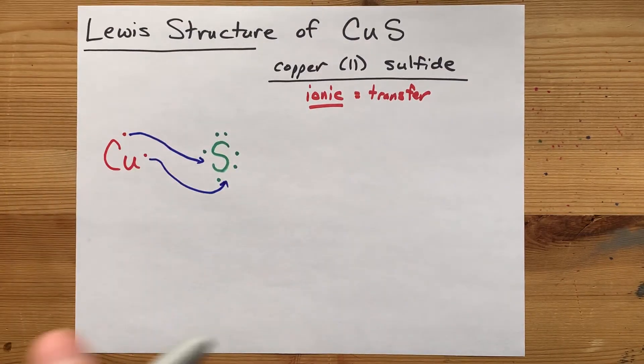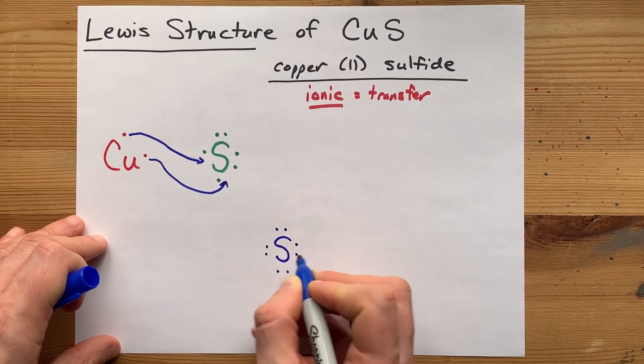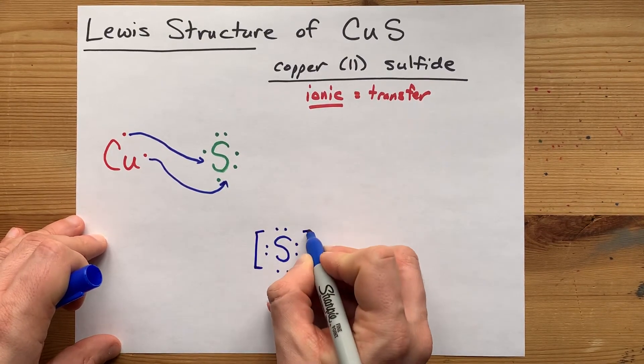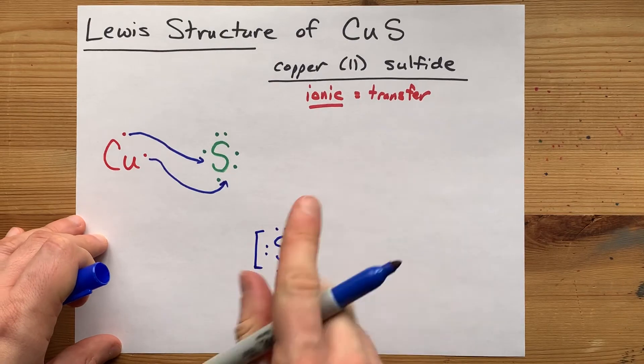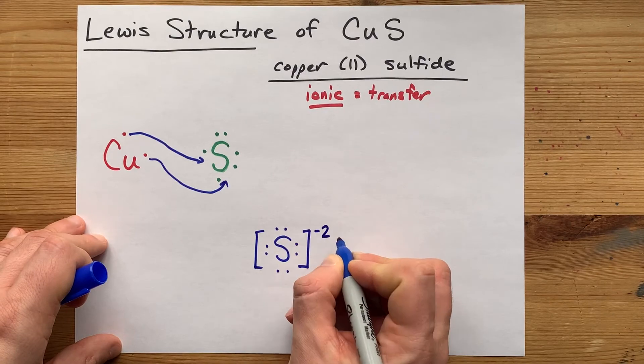Let's draw the completed Lewis structure. Sulfur now has eight valence electrons—nice and stable. That's two more electrons than it had to start with. So, it's a minus 2 charge.